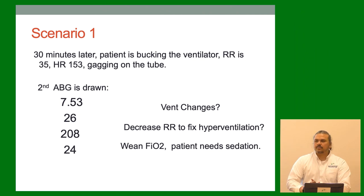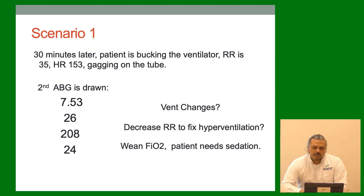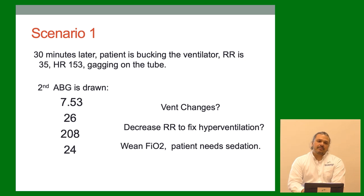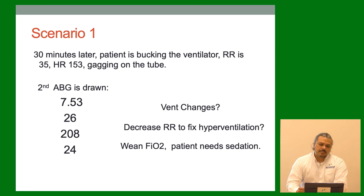What's going on? We've overcorrected this patient — he's now really, really over-breathing and is alkalotic. Can we decrease the respiratory rate to fix hyperventilation on the vent? Not really — we can't make them breathe slower. This patient looks like they need sedation. They're bucking the vent, gagging on the tube. Also that PaO2 of 208 is too much — let's wean that, cut it in half. We're going to wean the FiO2 and the patient needs sedation.